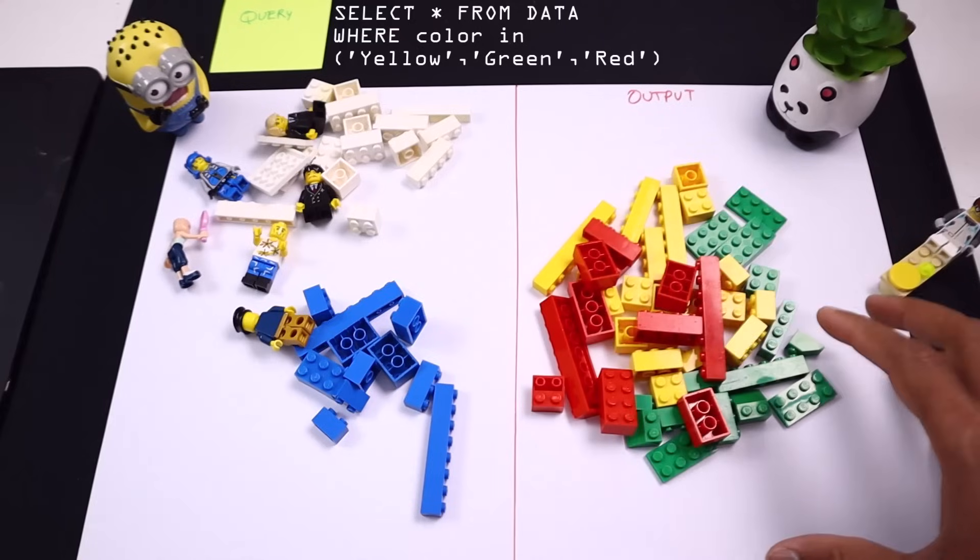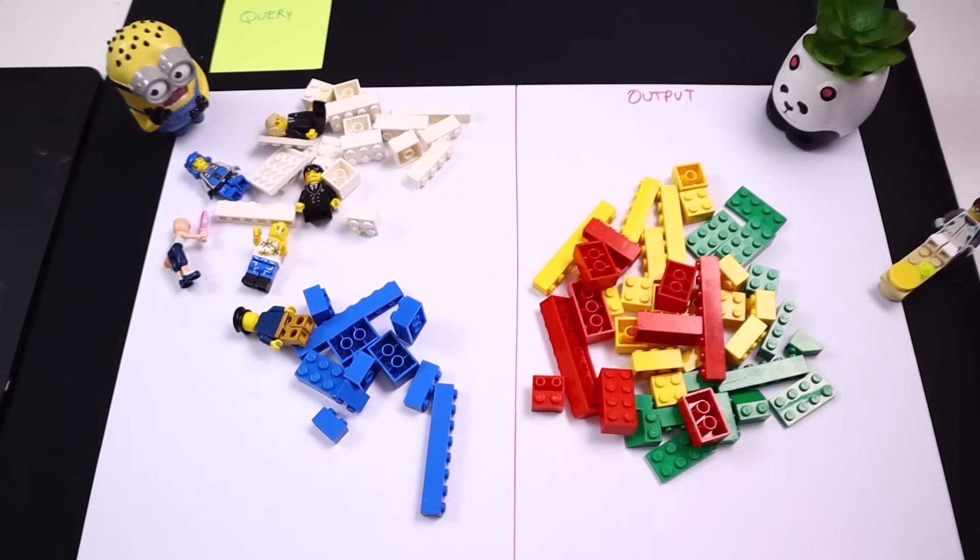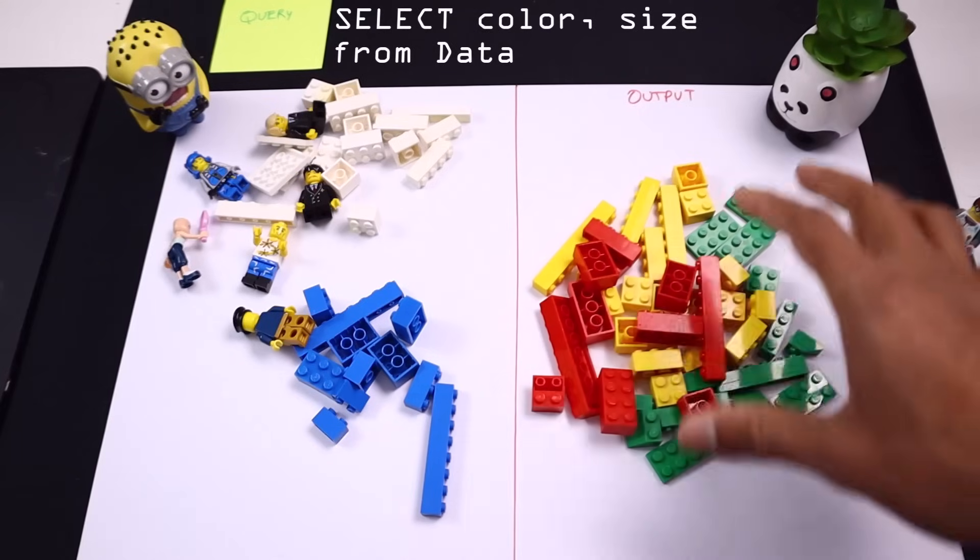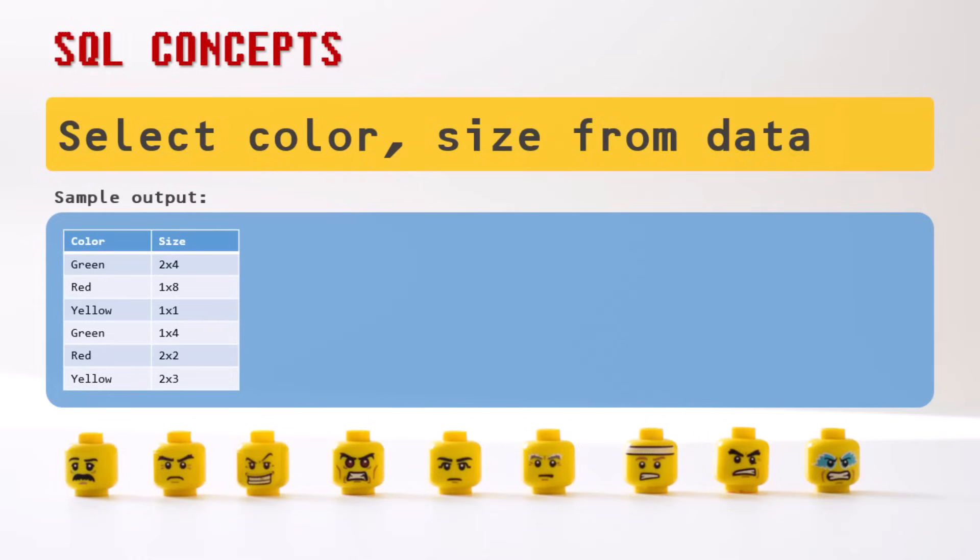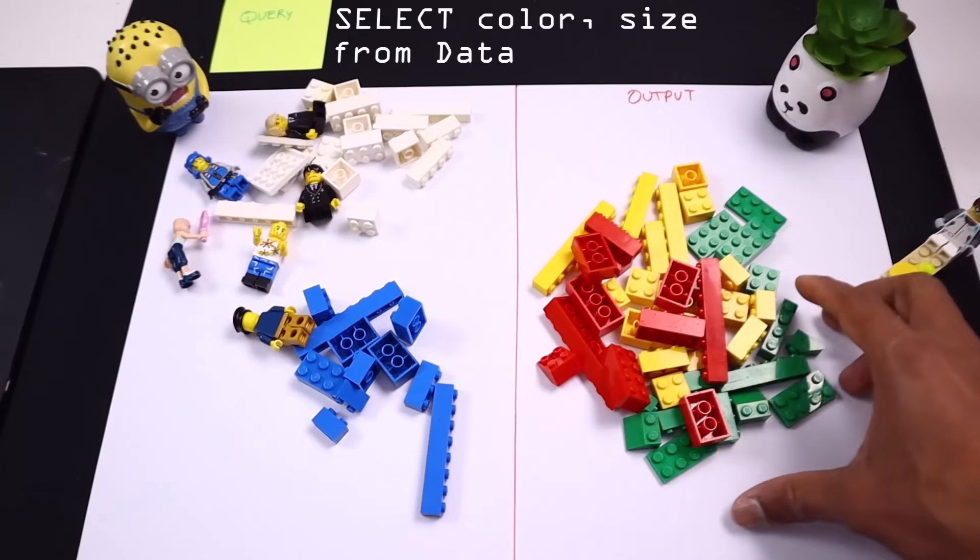This is how you can use the where clause in SQL to kind of pick and choose the data that you want. So far we are only saying select star, but if you want to just see the color of the brick or the size of the brick, you can say select color comma size from data and then you will be able to see just the color and size columns and no other columns.